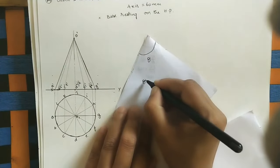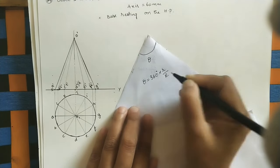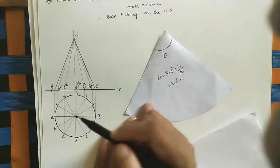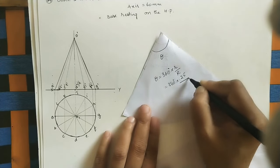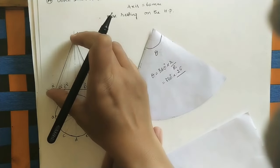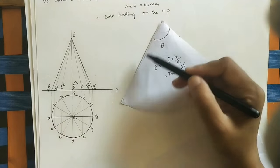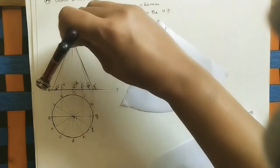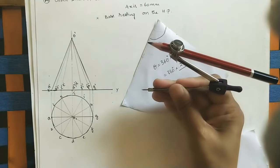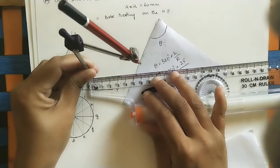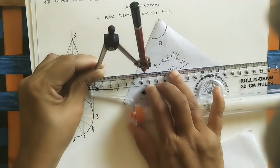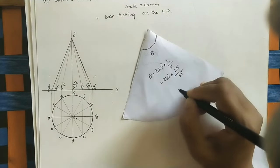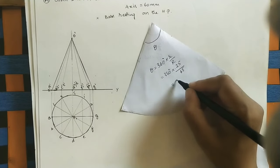To find the sector angle for the development, we use the formula: theta = 360 degrees × (small r / capital R). Here small r is the base circle radius, so with diameter 50mm the radius is 25mm. Capital R is the slant height — the length of the generator. Measuring from the diagram using a compass and scale, we get capital R = 65mm.